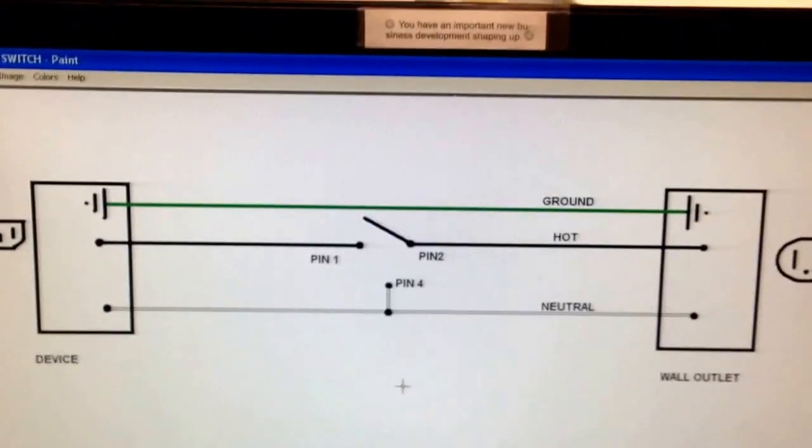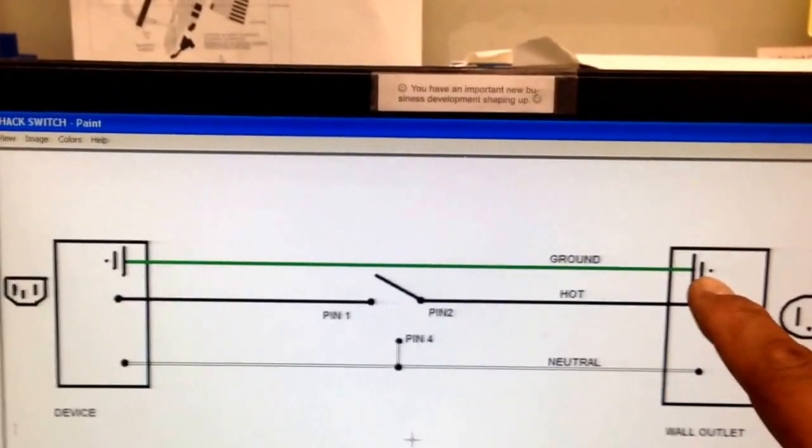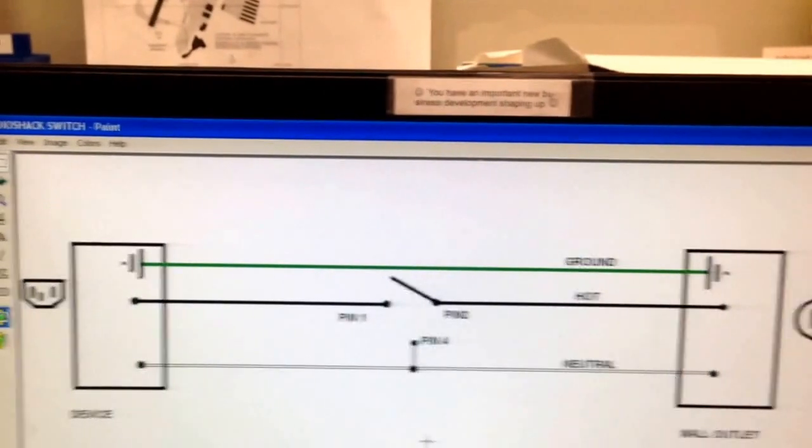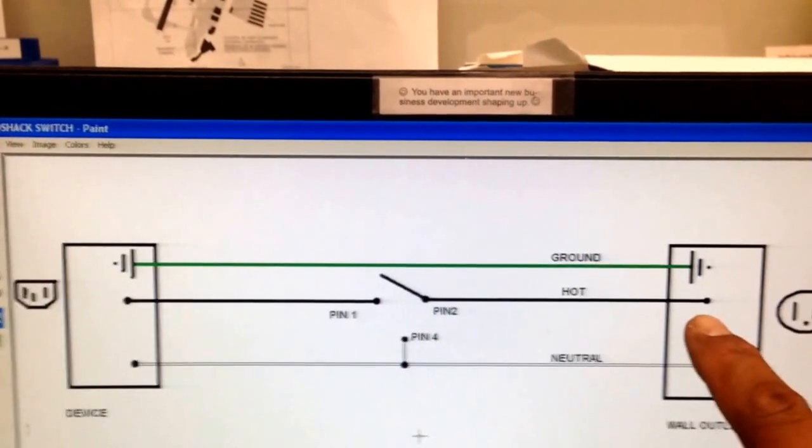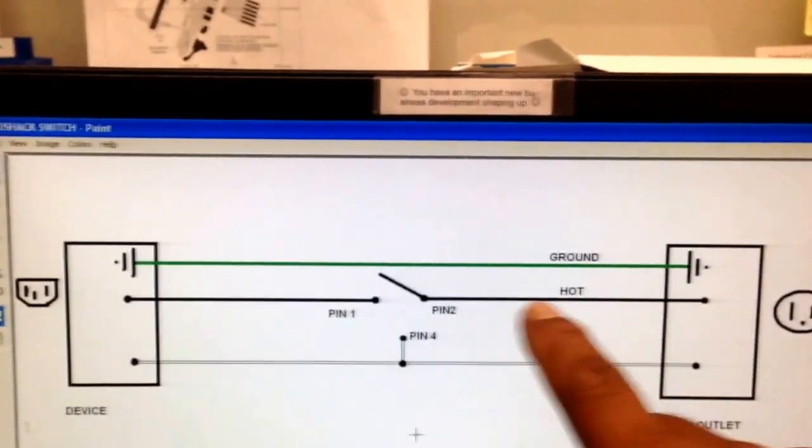So if you take a look at here, ground goes from the wall outlet to the ground of the device, of course. Then you've got the hot, and the hot coming from the wall needs to go to pin two.